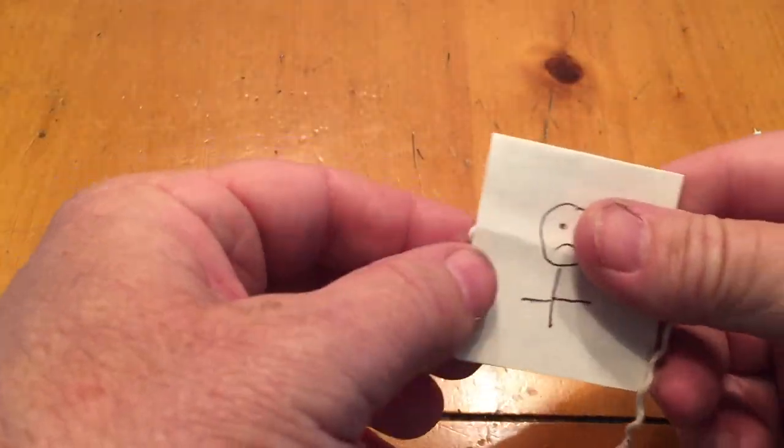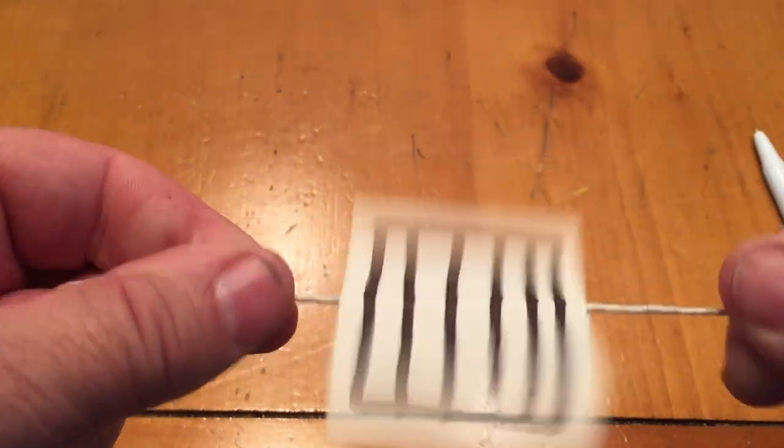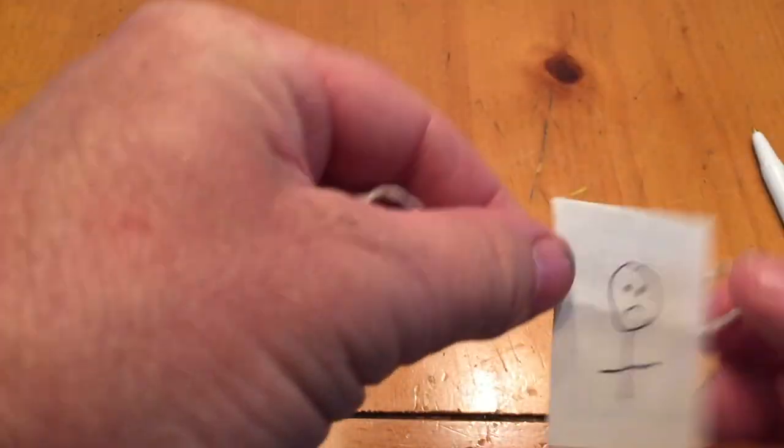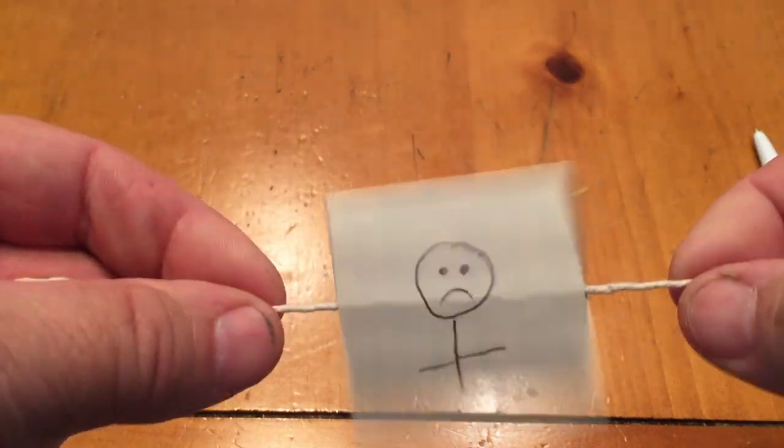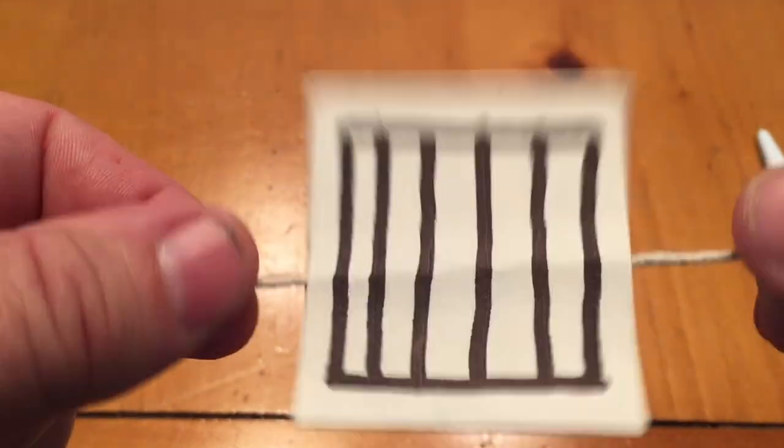Once you have this done, then you want to make sure that one image is facing the right direction. It doesn't really matter with the bars here. And then you give it a, well, it does matter. I had it upside down and then I spin it and you can see when it spins really quick, the unhappy man is in jail.